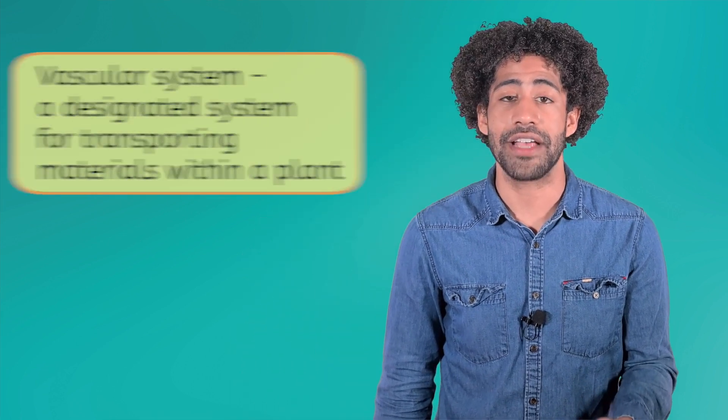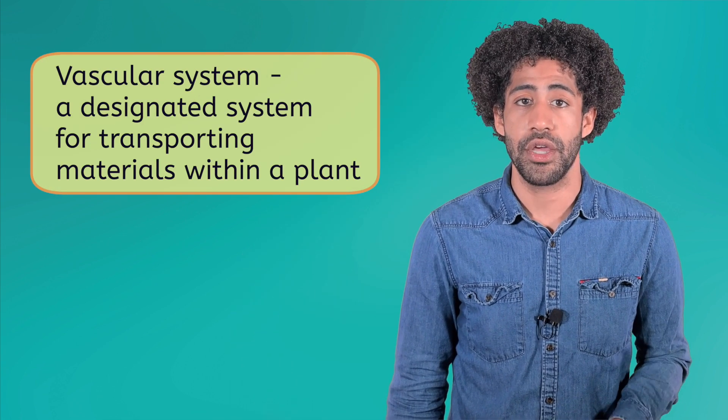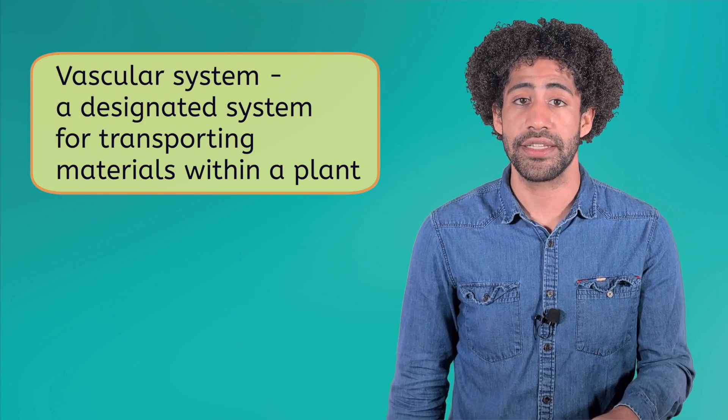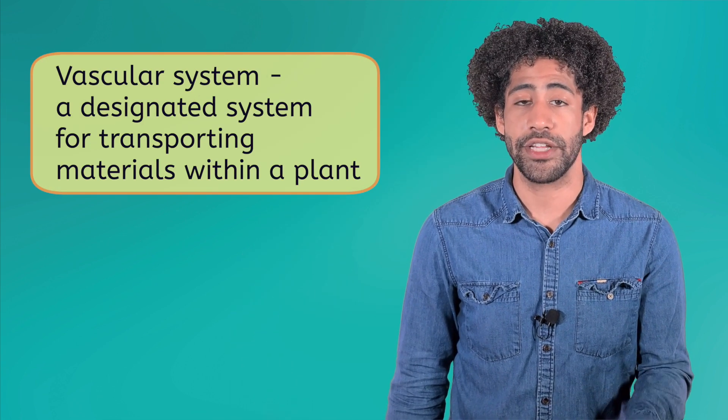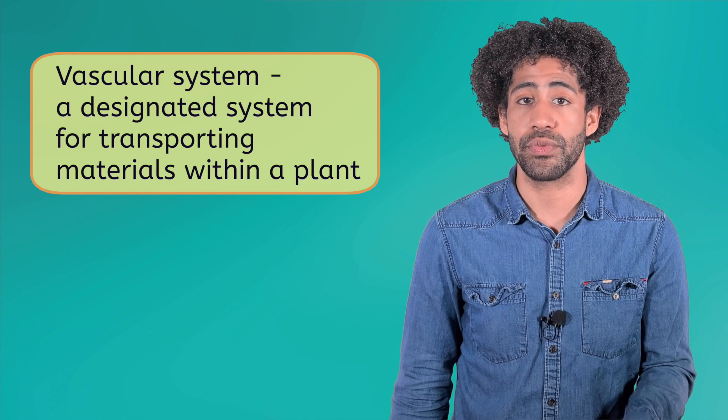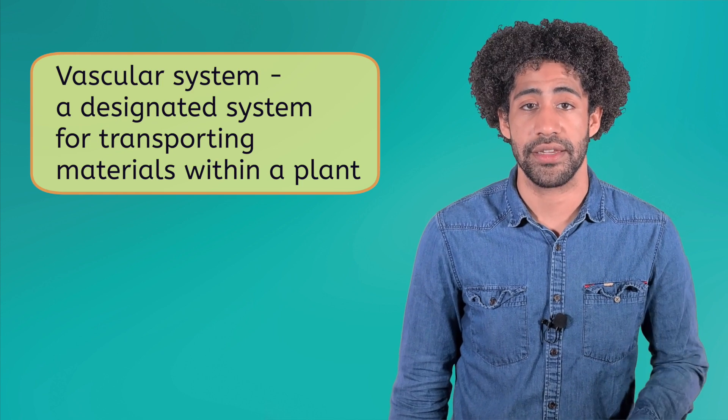In taxonomy, scientists typically categorize different groups using specific traits or characteristics. One of these characteristics in plants is the presence or absence of a vascular system, which is a designated system for transporting materials within a plant.